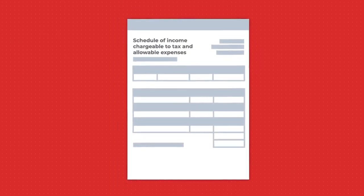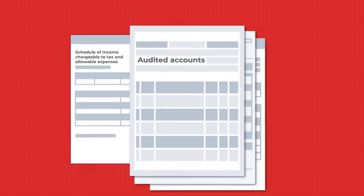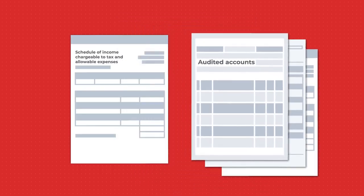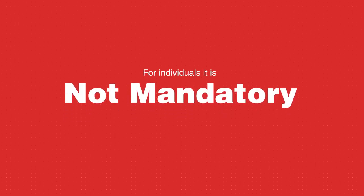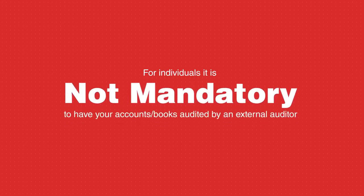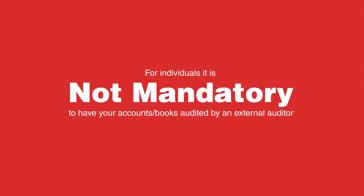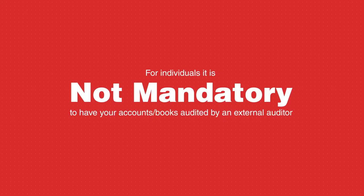The taxpayer will be required to have prepared a schedule of their income chargeable to tax and allowable expenses incurred wholly to generate this taxable income. Those with audited accounts can use them to file the return. For individuals, it is not mandatory to have your accounts or books audited by an external auditor.